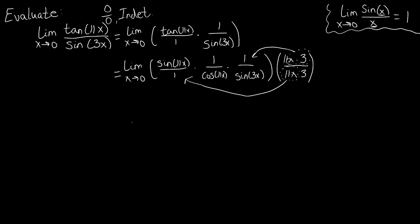So let's rewrite what we just did there. We're going to have the limit as x approaches 0 of sine of 11x over 11x times 1 over cosine of 11x times 3x over sine of 3x, and all this is being multiplied by now a factor of 11 over 3. That's what we have left over after we moved in certain parts of our multiplication out here.